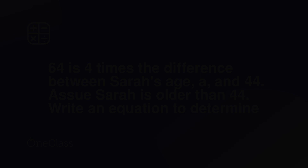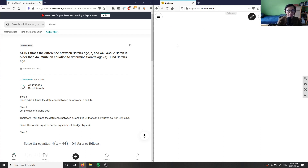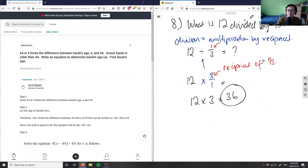Alright, let's look at number nine. Number nine is asking us: 64 is four times the difference between Sarah's age, a, and 44. So this here is problem number nine.